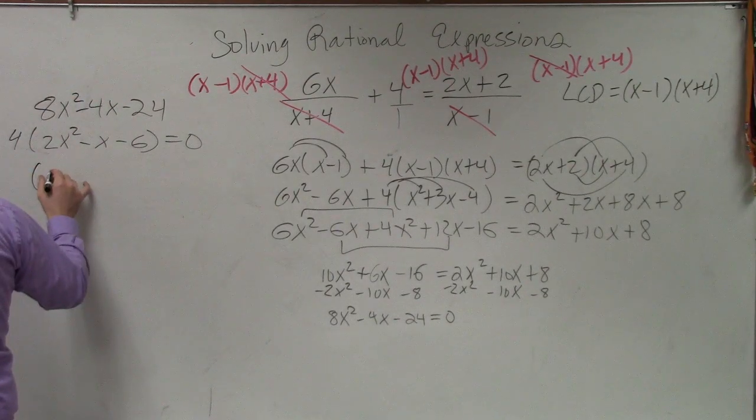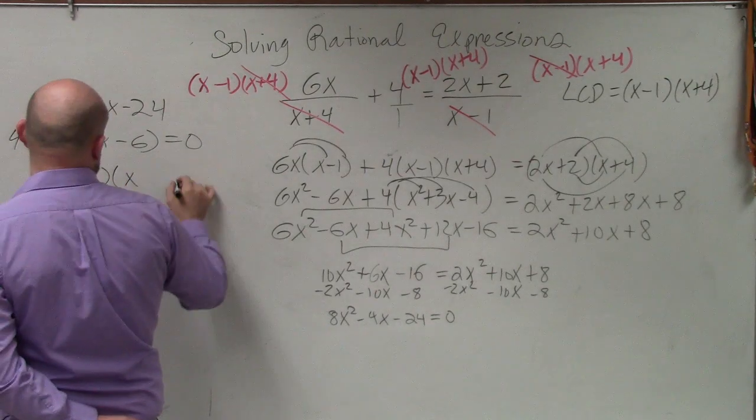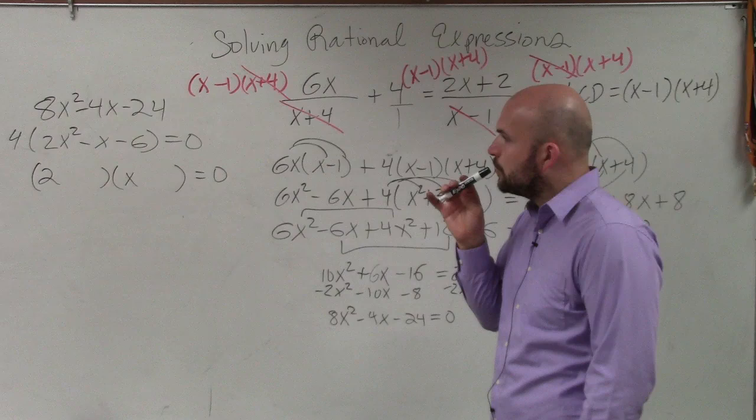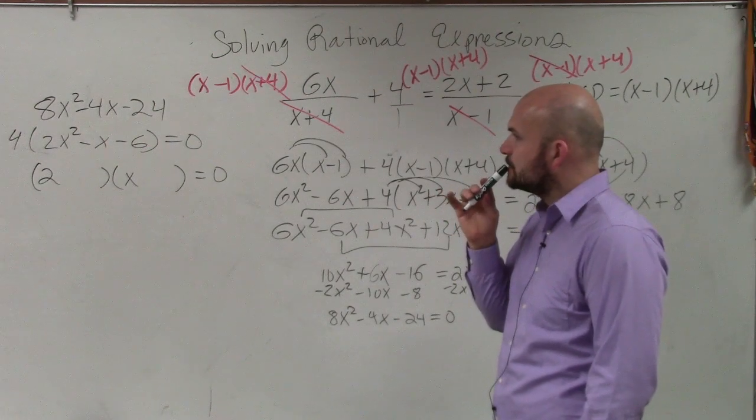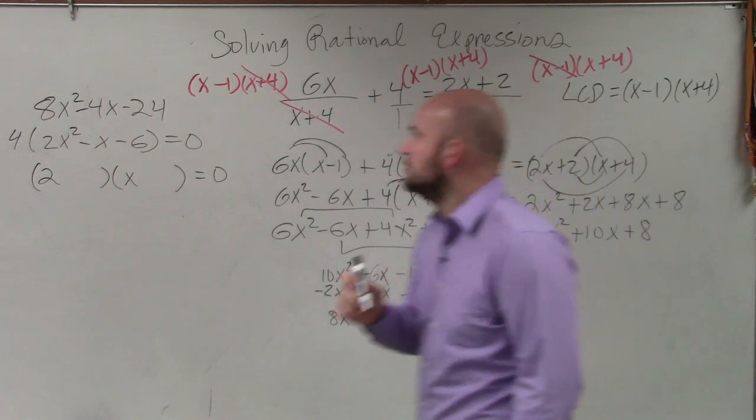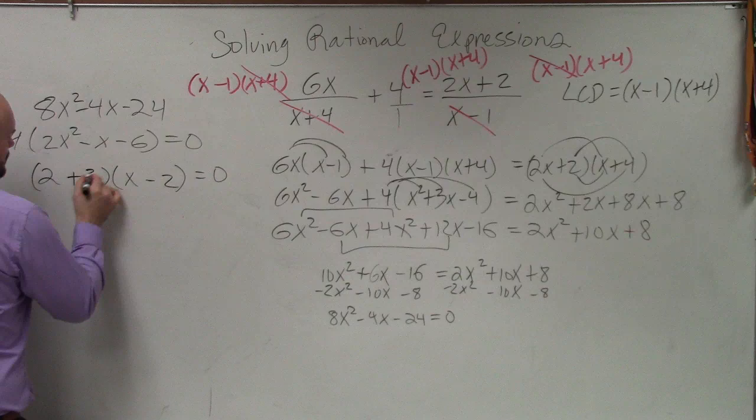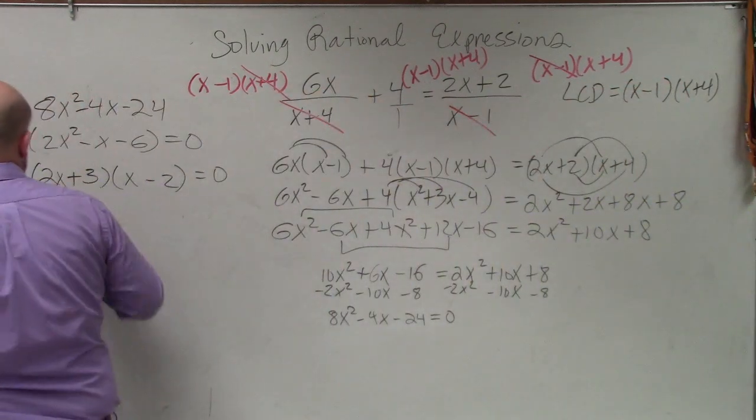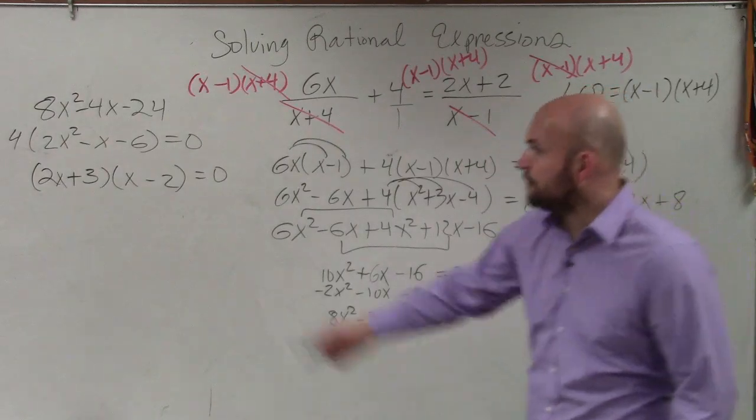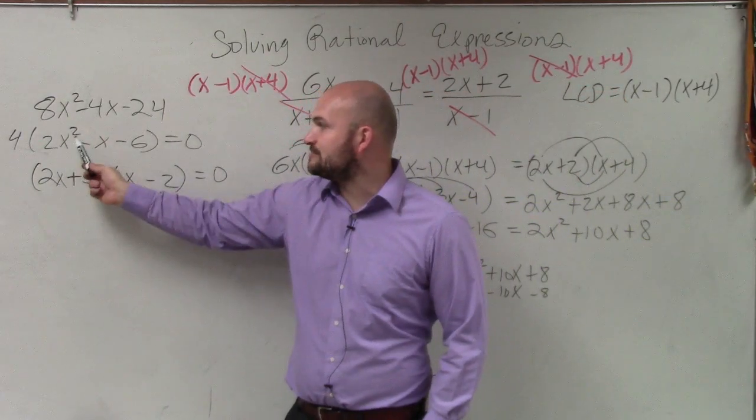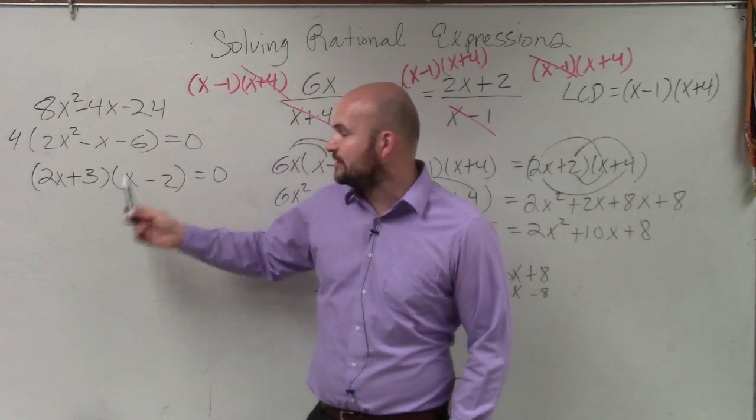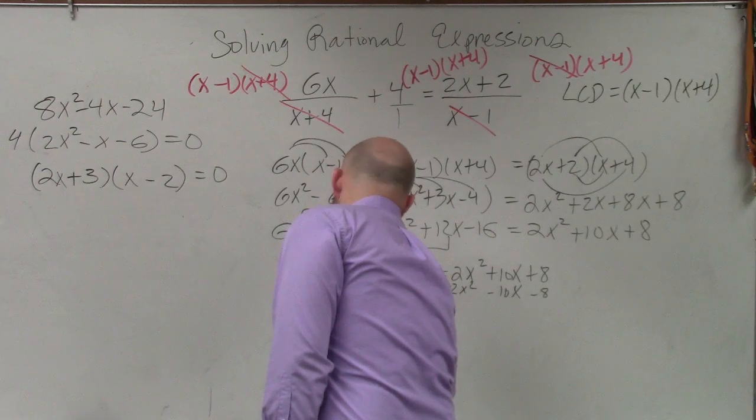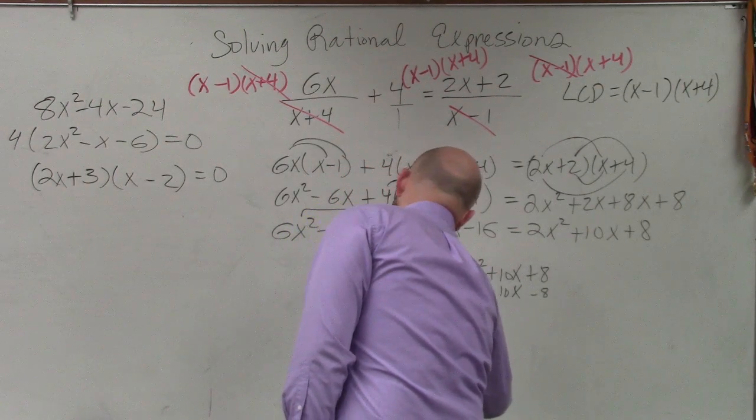And basically, ladies and gentlemen, if you go ahead and factor this, let's see if I can do this one on my own. So now you go ahead and take this factored form. I basically just did the factoring in my head. I know that 2x times x gives me 2x squared. 3 times negative 2 is negative 6. And then what I calculated in my head was 3 times x plus 2x times negative 2 gives me negative x. So therefore, I have 4 times 2x plus 3 times x minus 2 equals 0.